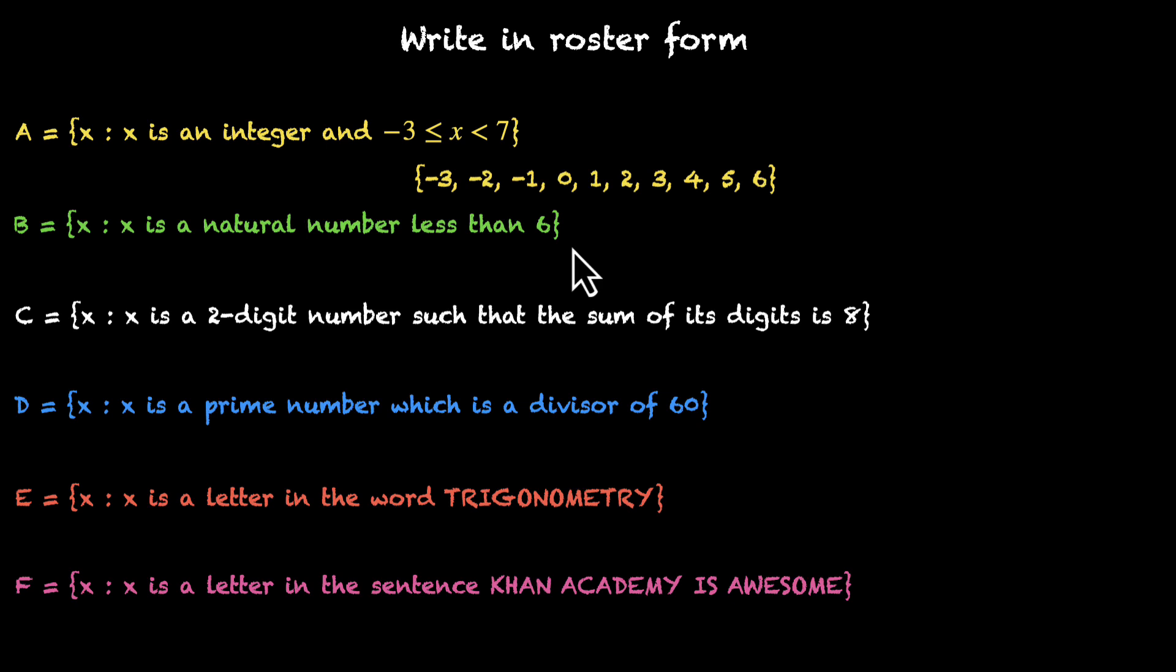Alright. Let's take the next one. X is a natural number less than 6. So natural numbers begin with 1. So we have 1, 2, 3, 4, and 5. That's the answer.